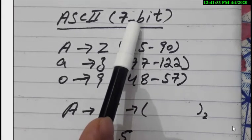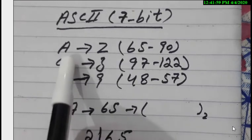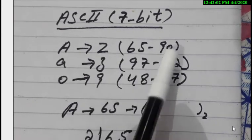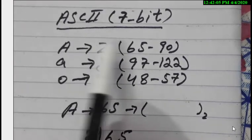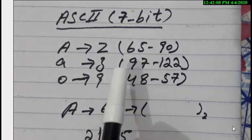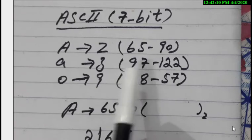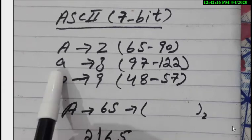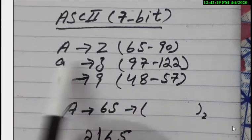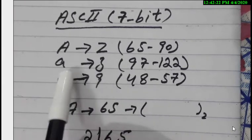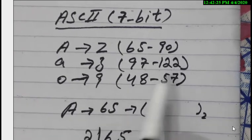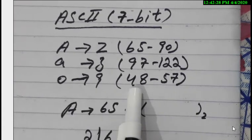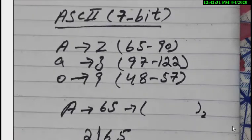The standard coding scheme uses 7 bits, meaning there are 128 characters, each representing a different code. For capital alphabets A to Z, the codes range from 65 to 90, meaning A equals 65, B equals 66, C equals 67, and so on up to capital Z which equals 90. For lowercase alphabets, a equals 97, b equals 98, c equals 99, and z equals 122. The digits 0 to 9 have codes from 48 to 57.